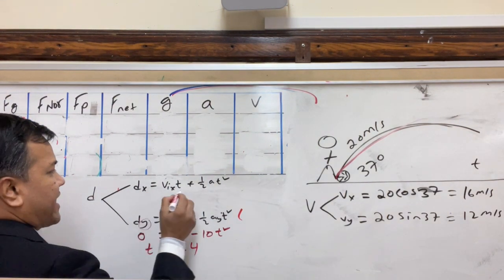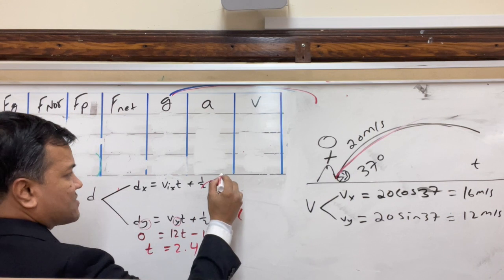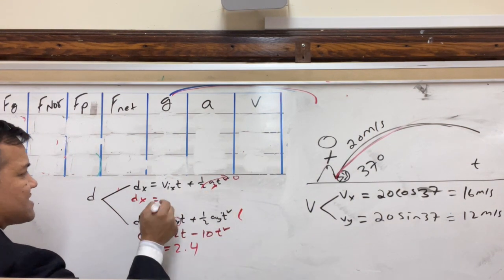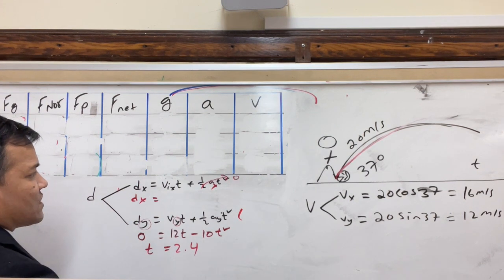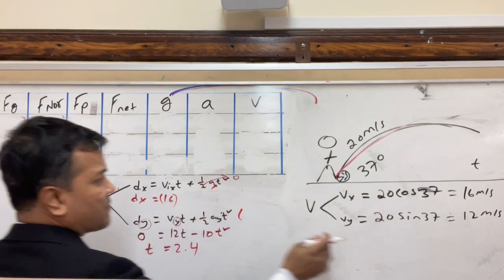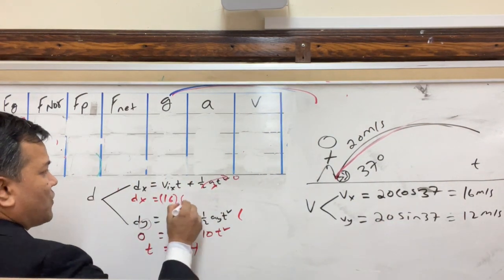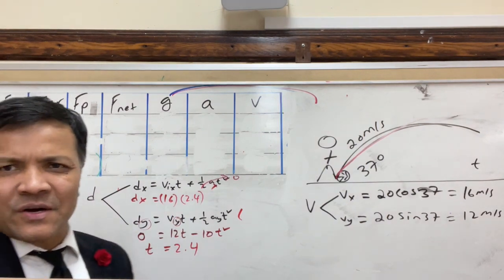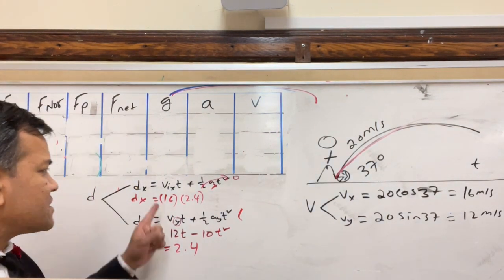Now you're going to use that over here. Acceleration due to gravity in the x direction is zero, so you try to find dx. dx = Vix, which is 16, times 2.4. This is not 60 meters. This is not even close to 60 meters.